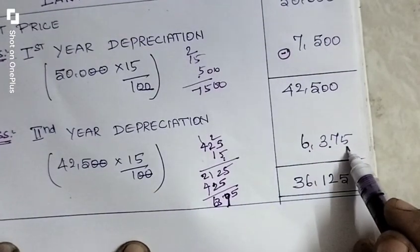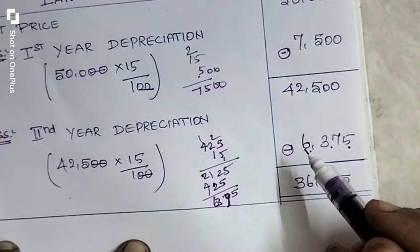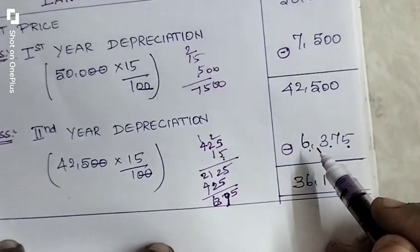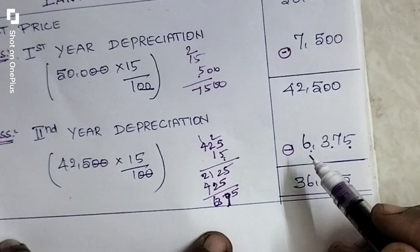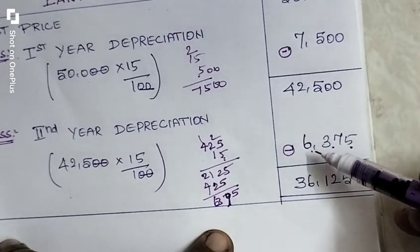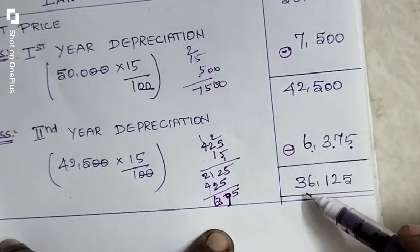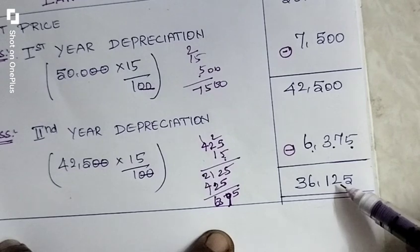So 6,375 is the second year depreciation. They asked to calculate 2 years depreciation value with diminishing method. Now we have to subtract 6,375 from 42,500. We will get 36,125.